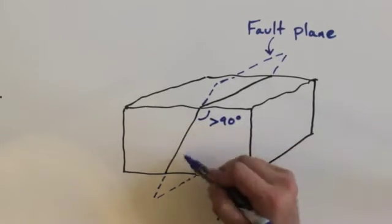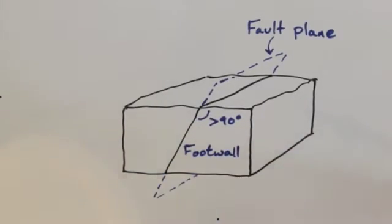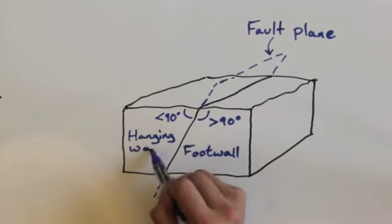Next, we have the foot wall, which has an obtuse angle at the top, and the hanging wall, which has an acute angle at the top.